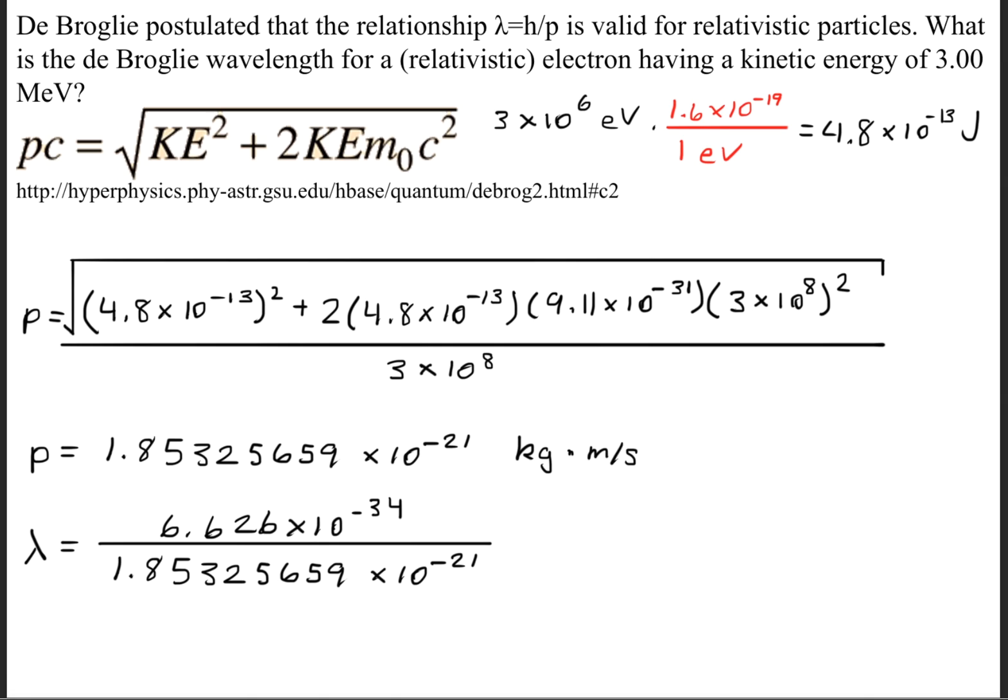Afterwards, we'll substitute in these values in the de Broglie wavelength formula. And this is going to give us a wavelength of 3.58 times 10 to the negative 13th meters. So this is how you solve the question. I hope that helps.